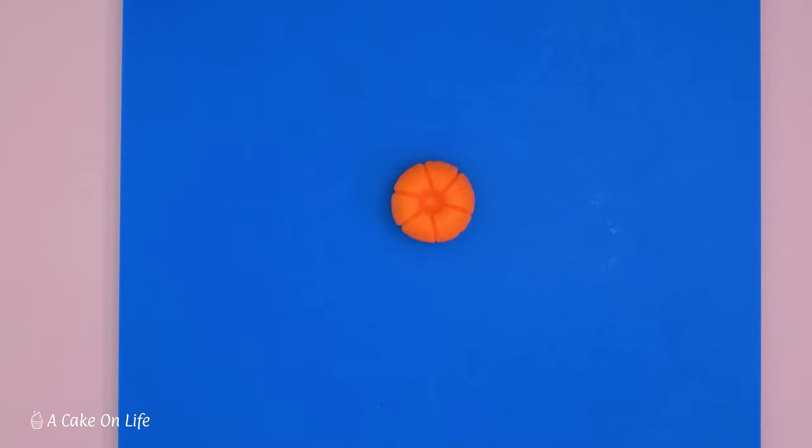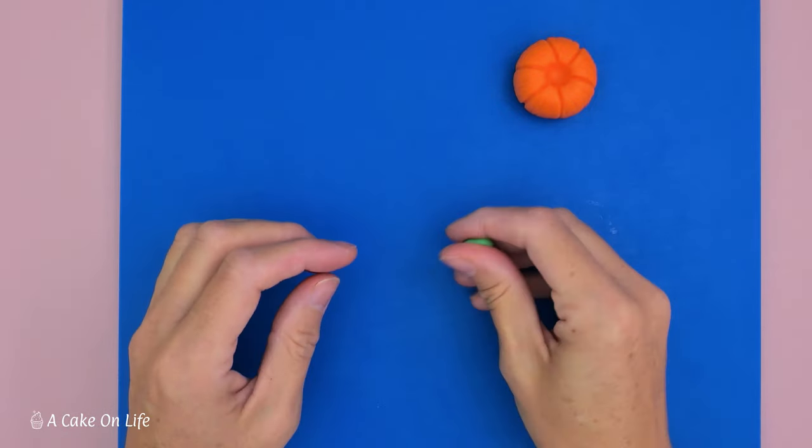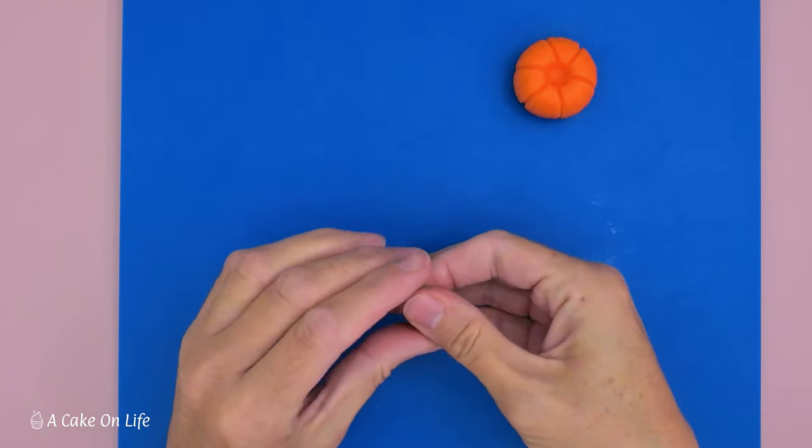So now I've just got a pea sized amount of green modeling paste. I'm just going to flatten that and then form it into a flat diamond shape.